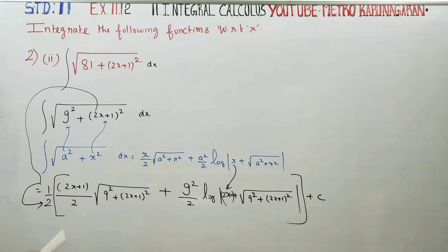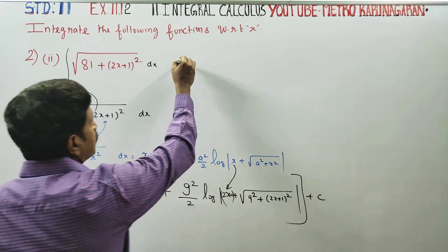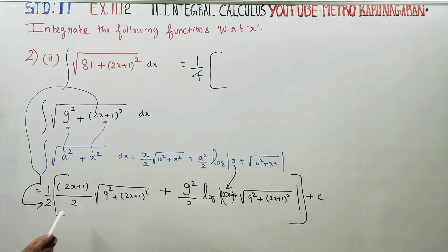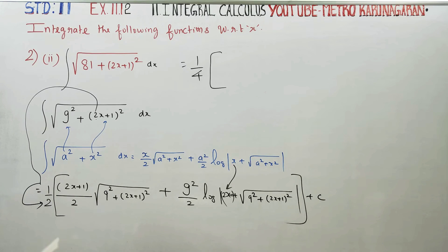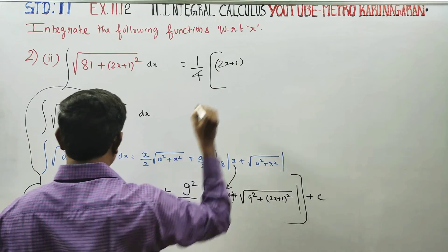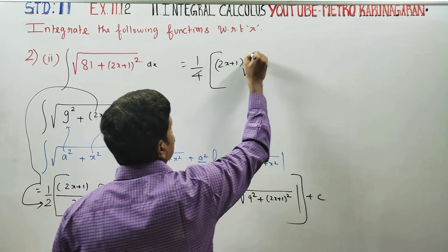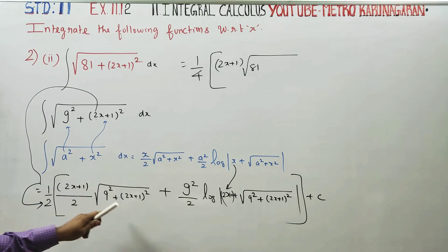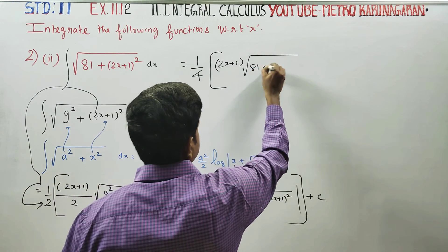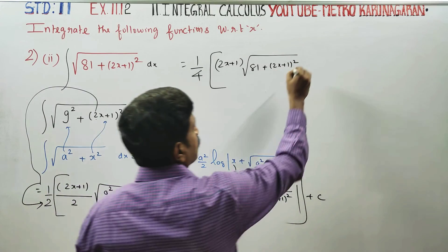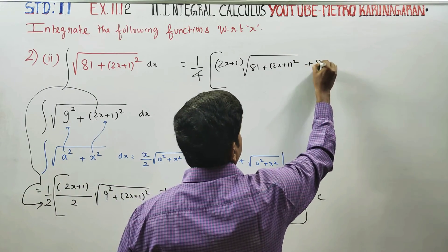Taking 2 as common from two tables, the common factor is 2, giving us (2x+1). Then: root of 9 square is 81, so we have 81 plus (2x+1) whole square.